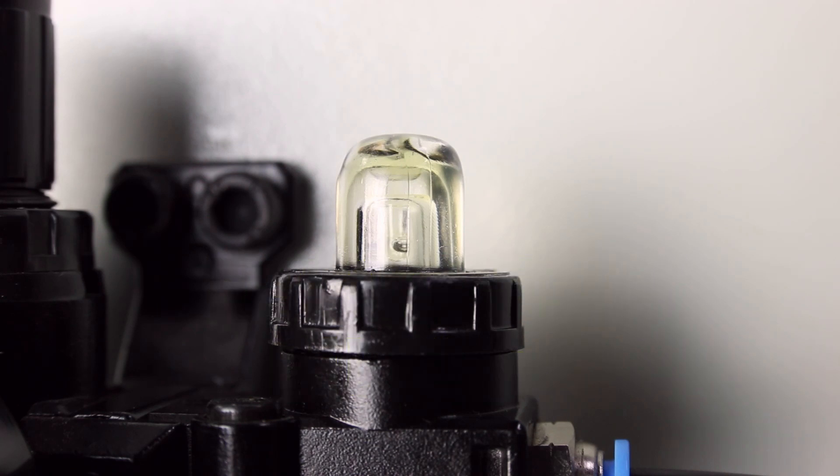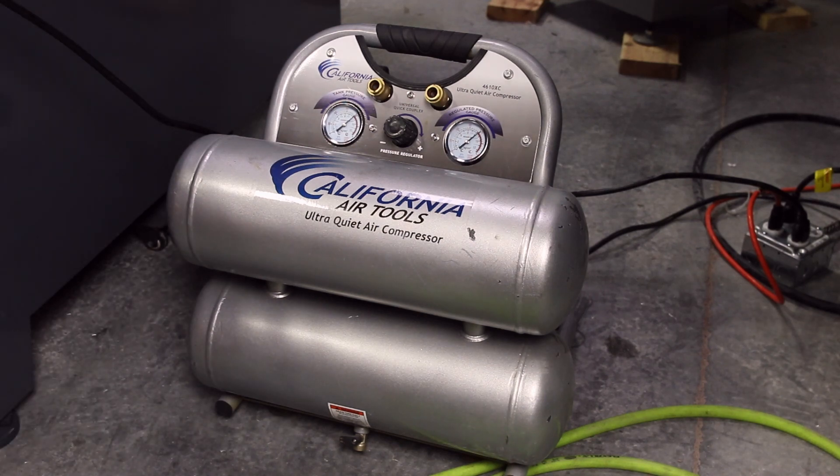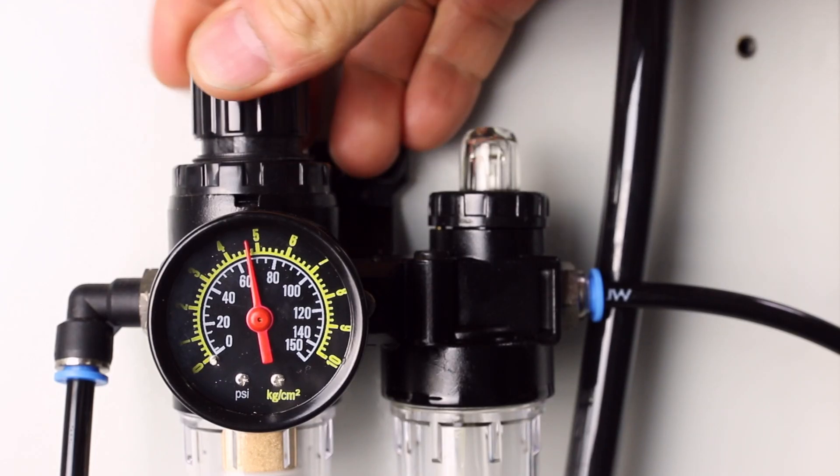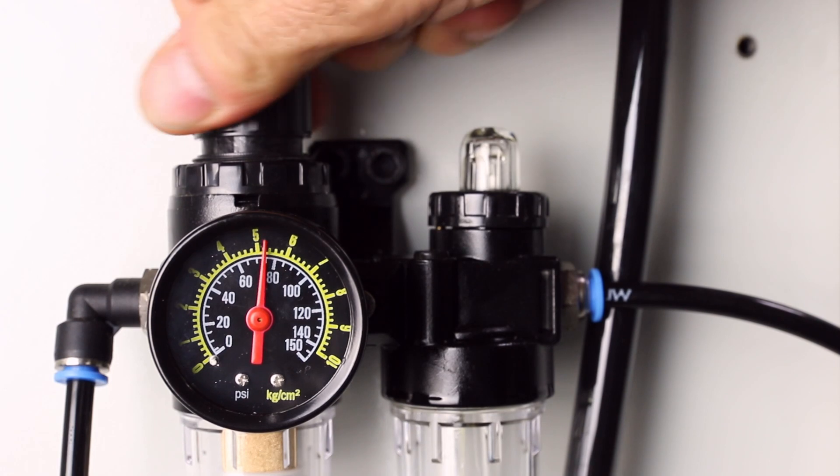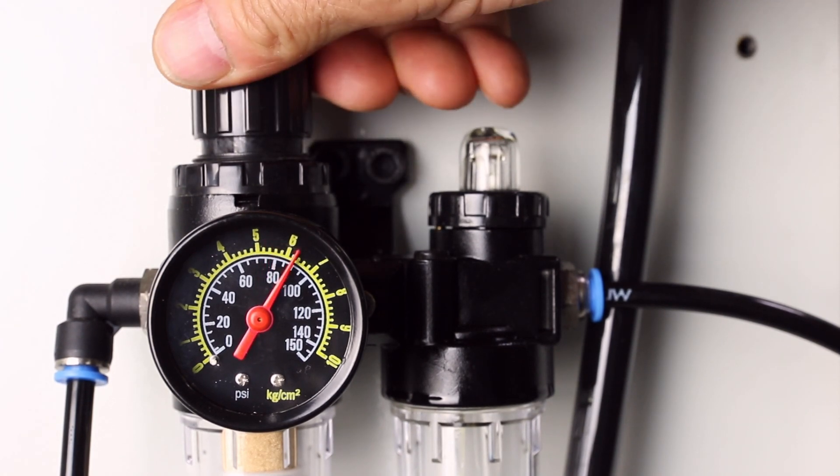To set the correct airflow on the ATC's FRL, make sure the air compressor is set to 90 psi. On the FRL's regulator, lift the adjustment knob and set the air pressure to 90 psi. Re-secure the regulator's adjustment knob.